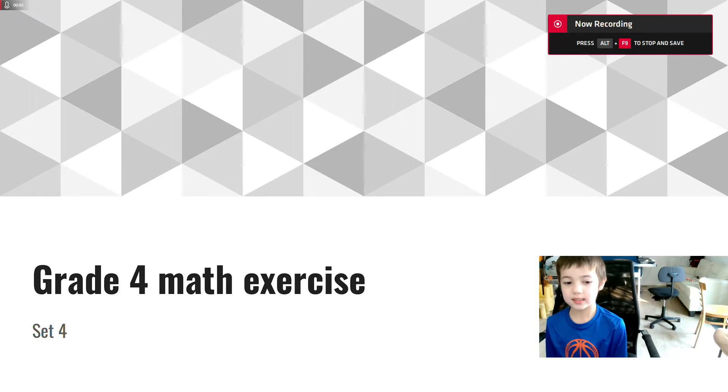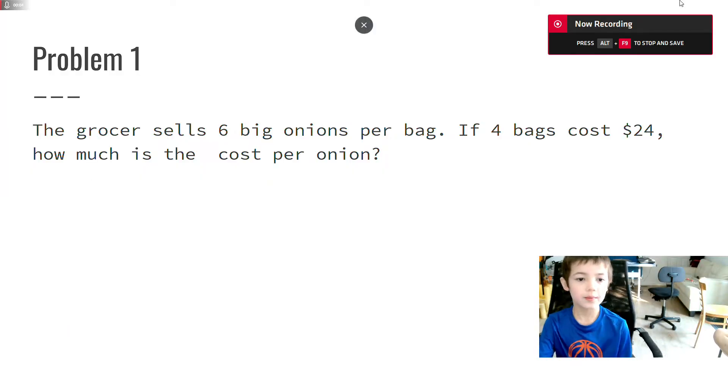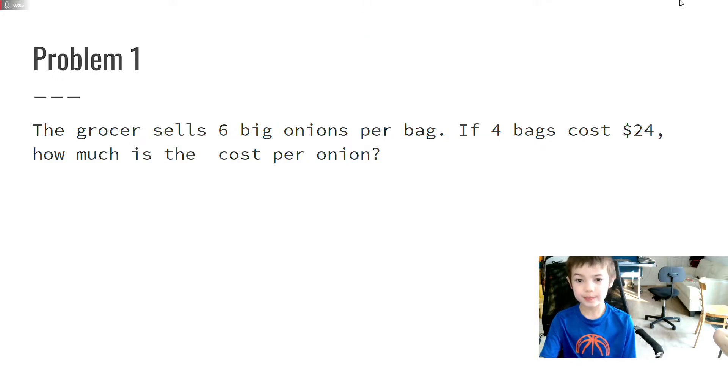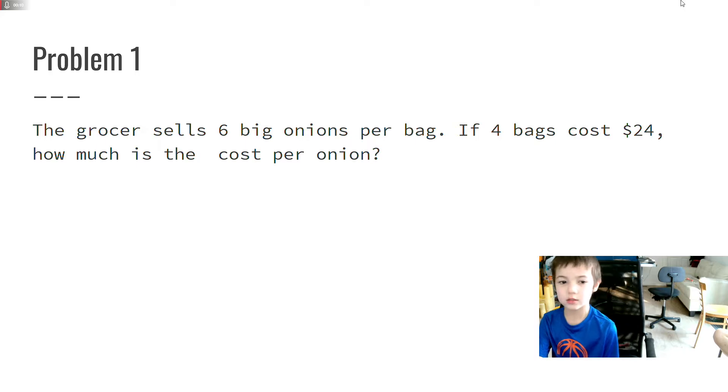Ready for the math exercise, step 4. Problem 1: The grocer sells 6 big onions per bag. If 4 bags cost $24, how much is the cost per onion?